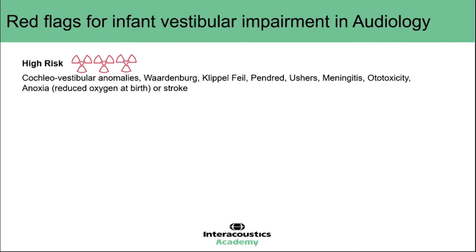Things we might consider at high risk of having vestibular impairment alongside hearing loss are any inner ear abnormalities — cochlear vestibular abnormalities, either congenital or acquired early in life. Syndromes such as Waardenburg, Klippel-Feil, Pendred, or Usher's. Conditions such as meningitis, where we can have changes around the inner ear structure or damage to the inner ear organs. Ototoxicity or anything around birth that has placed the cochlea or inner ear structures at risk can implicate the vestibular end organ at the same time — and that is possibly the bit we may overlook when concentrating solely on the hearing.